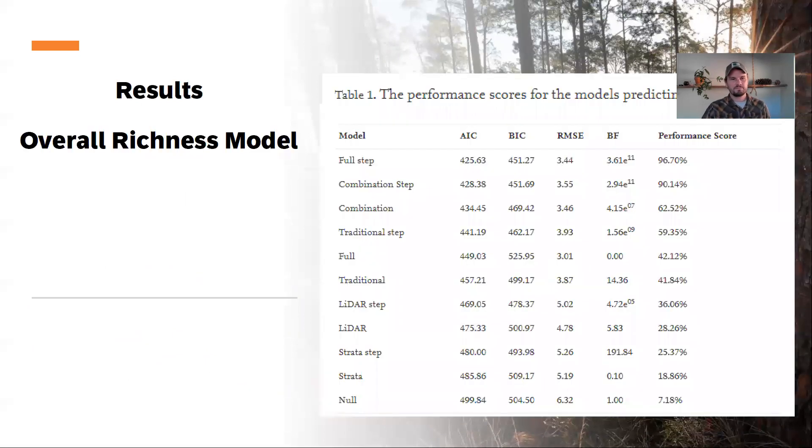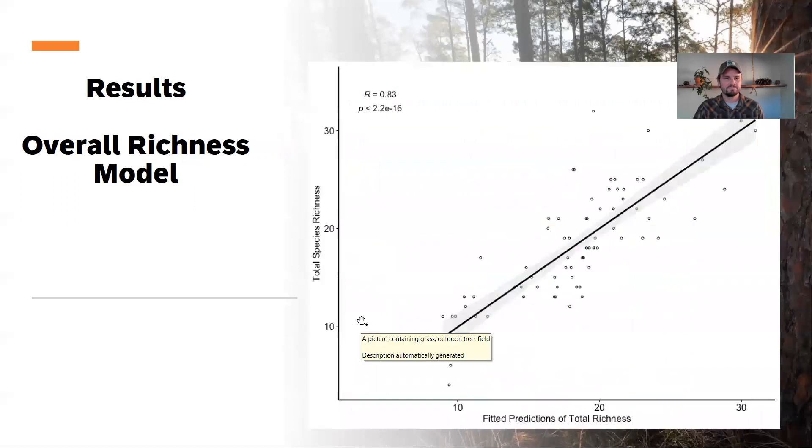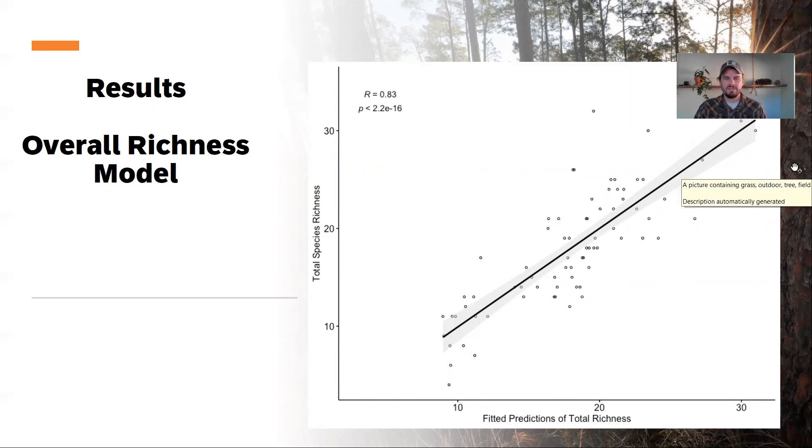So the results. Here's our overall richness model. You can see that the combination of terrestrial LiDAR metrics and traditional metrics in these combination and full models were the best to predict richness. We tested those across a number of criterion and Bayes factor and root-mean-square error to develop an overall performance score that we used to rank our models. You can see that the relationship here with Y as total species richness and X as the fitted predictions of richness yielded a pretty good fit for total species. Certainly significant, probably usable for most monitoring programs.